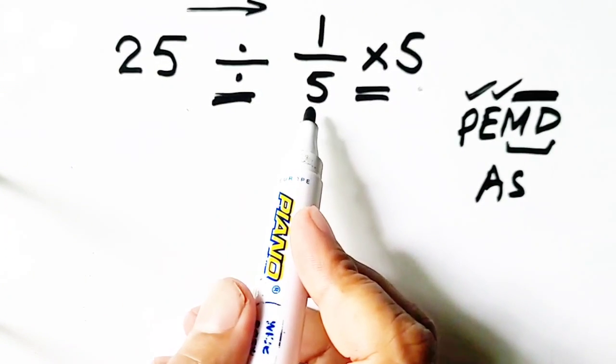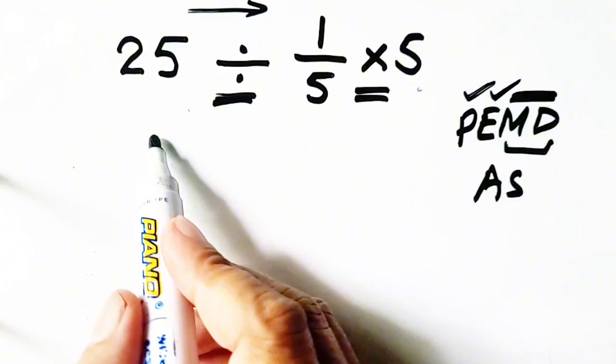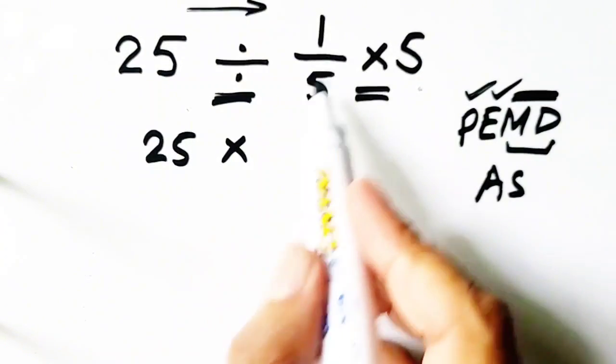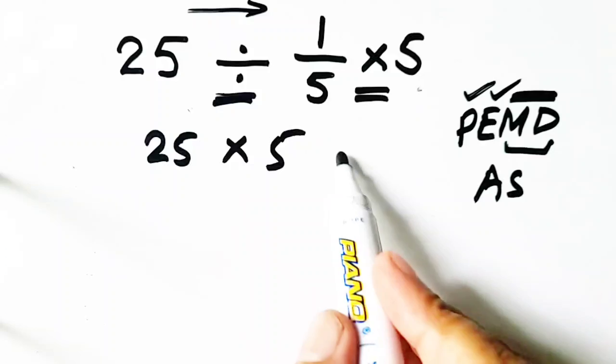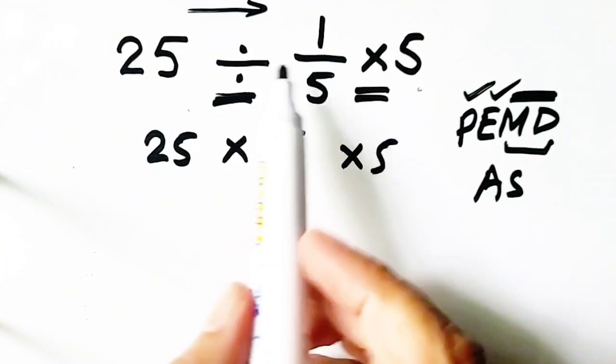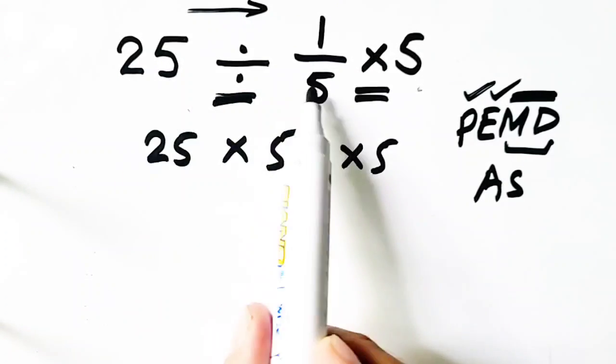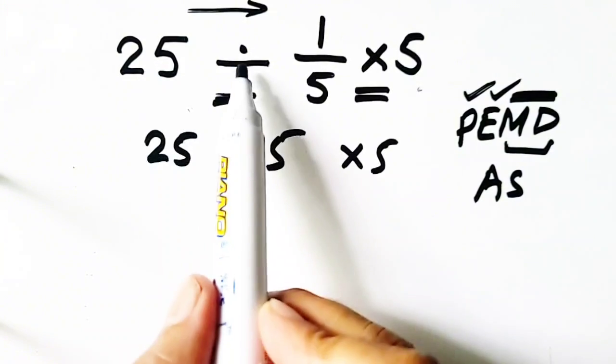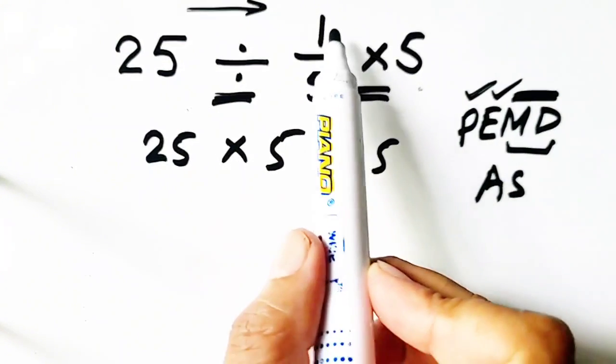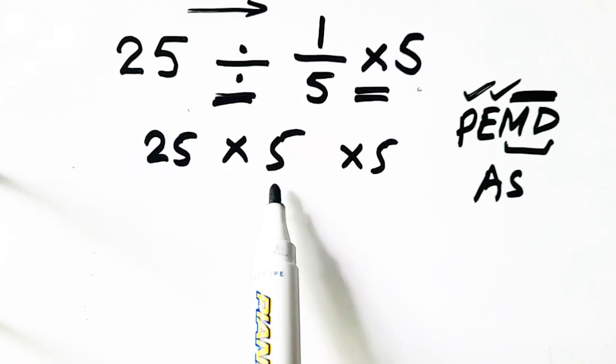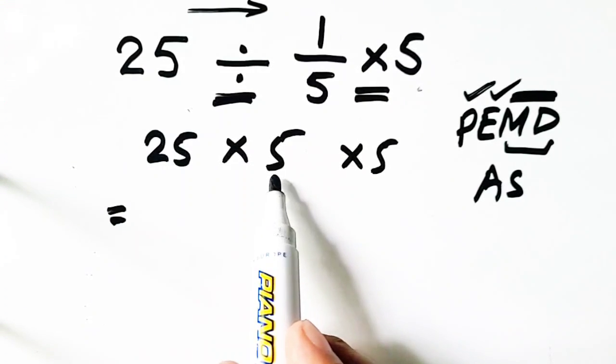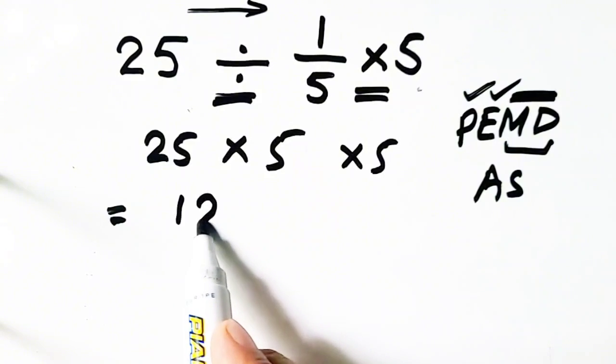Equals 25 times 5, because we have applied KCF. KCF is Keep the first one, Change the second one, and Flip the third one. So we will get 25 times 5 equals...